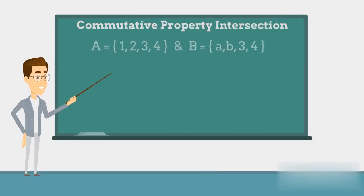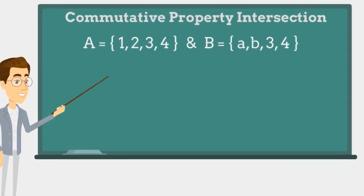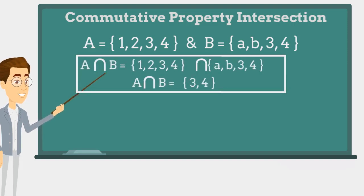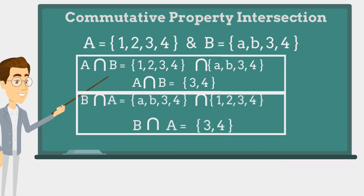Again, considering the same sets A and B, to prove the commutative property of intersection, we need to prove that the result of A intersection B is equal to B intersection A. The result of A intersection B is {3, 4}, and the result of B intersection A is also {3, 4}. This proves the commutative property of intersection of sets.